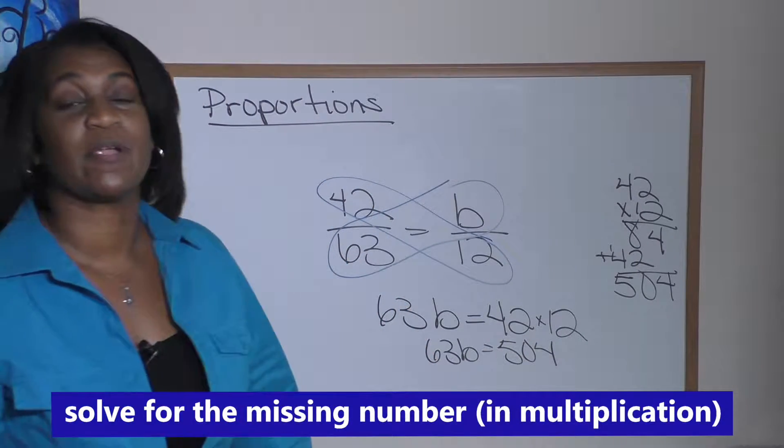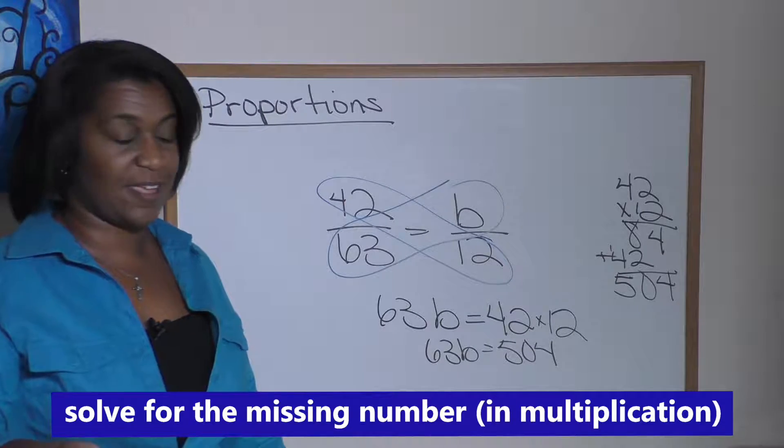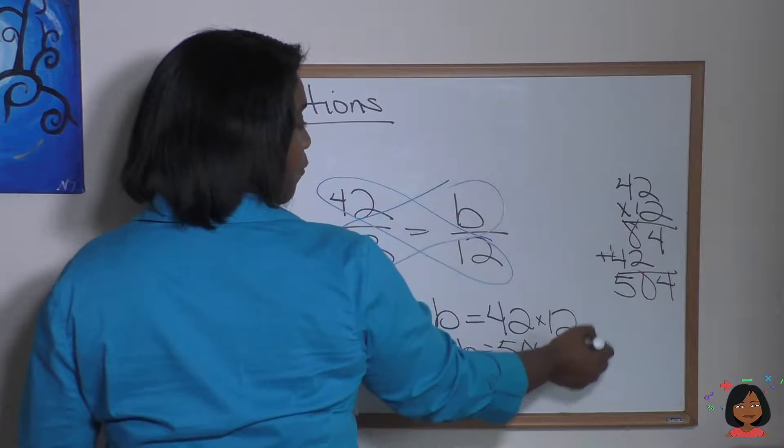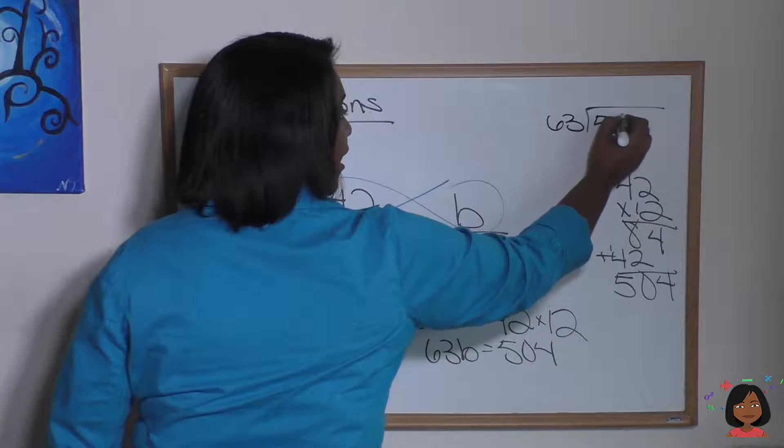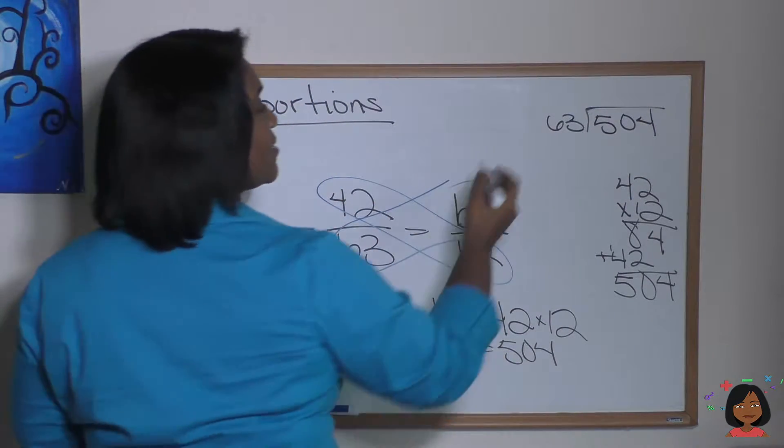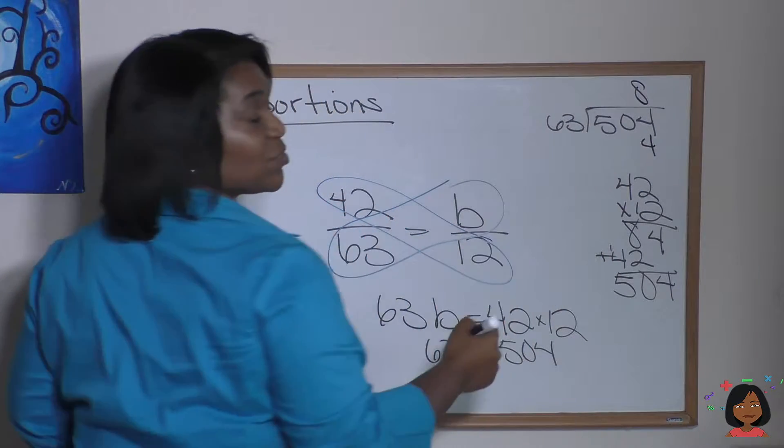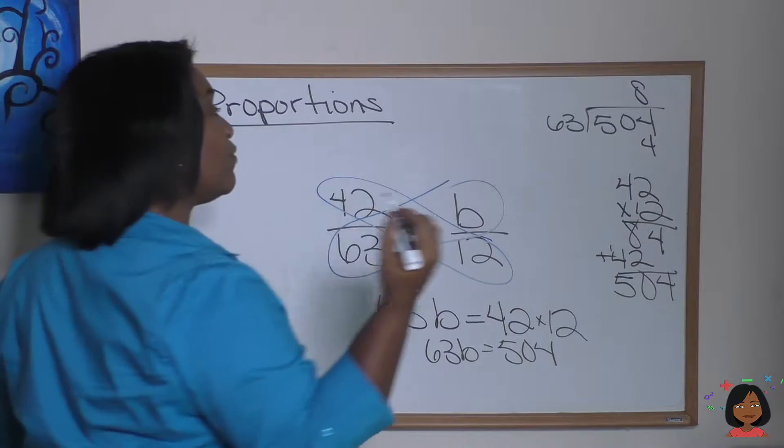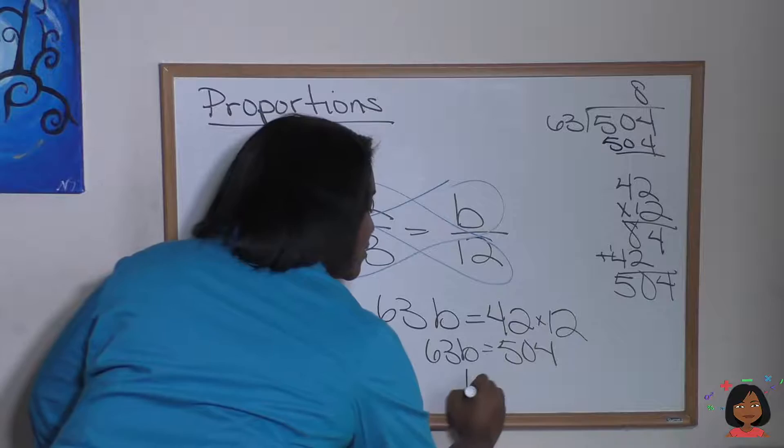So 63b equals 504. This is just now a missing number in multiplication, which means we do division to find the answer. Let's do 63 divided into 504. I'm going to do it up here. I'm running out of space down there. 504. And it looks like eight is the number. Eight times three is 24. Eight times two, eight times six is 48 plus two is 50.